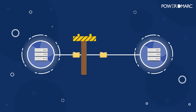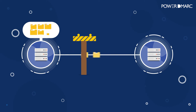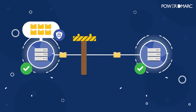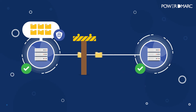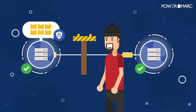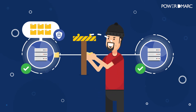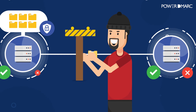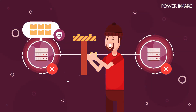You've basically given the attacker total access to view your data without you even knowing about it. But what if we could tell all the email servers that TLS encryption was absolutely necessary for emails sent to your domain? This would mean that if an attacker tried to stop your email from being encrypted, your server would simply refuse to send it.